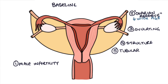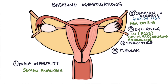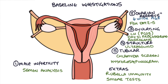To summarise the baseline investigations for infertility: in the man, a semen analysis checks the quantity and quality of sperm. In the woman, day 2–5 blood tests include FSH to check ovarian reserve and LH to look for PCOS. A day 21 progesterone checks for ovulation. An androgen hormonal profile, pelvic ultrasound, chlamydia screening, and then a hysterosalpingogram to assess the tubes are also performed. Additional routine tests include checking rubella immunity — with vaccination offered if not immune — and ensuring cervical smear tests are up to date.